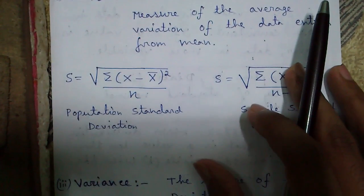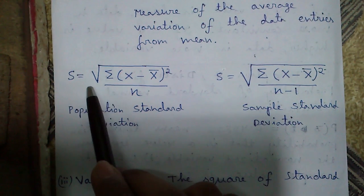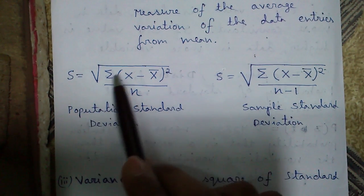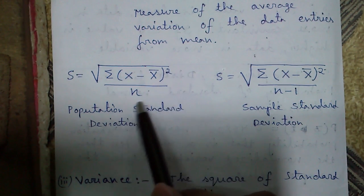Standard deviation. Standard deviation is the measure of average variation of data entries from mean. Standard deviation S is given by root over summation of (x minus x bar) whole square divided by n.